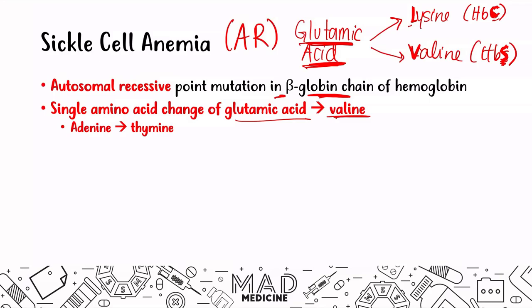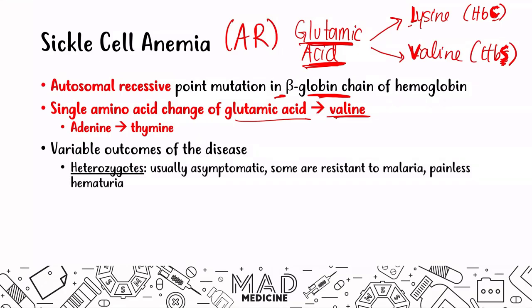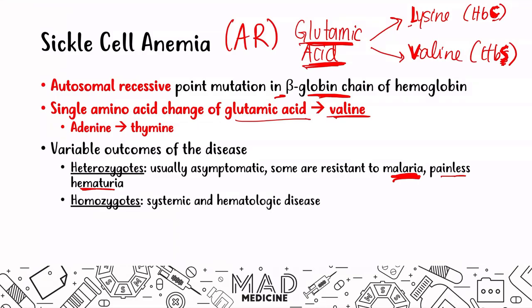When it comes to sickle cell anemia, outcomes vary. Heterozygotes are usually asymptomatic, sometimes resilient to malaria, and may show painless hematuria. Homozygotes — patients with two mutated sickle cell genes — will have systemic and hematologic disease, known as sickle cell disease.